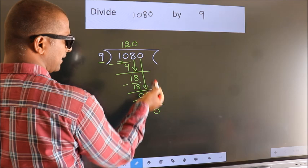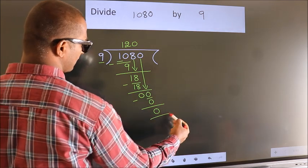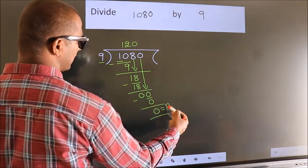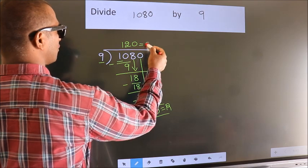No more numbers to bring it down, so we stop here. This is our remainder. This is our quotient.